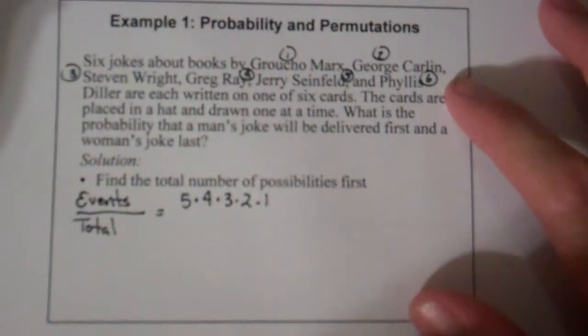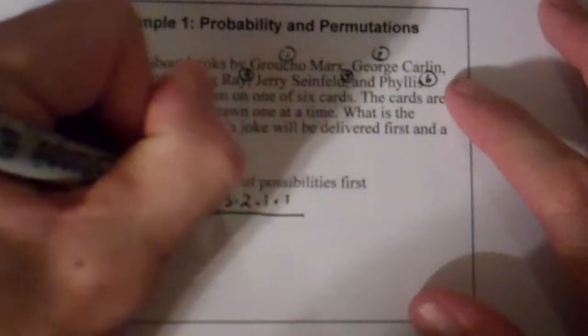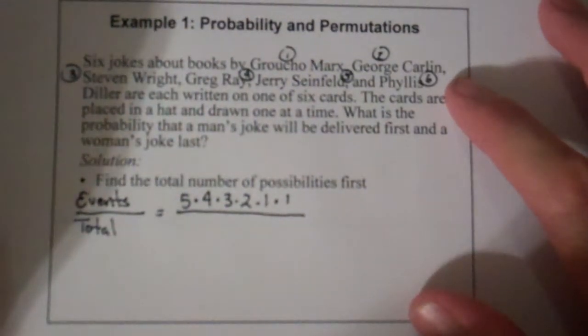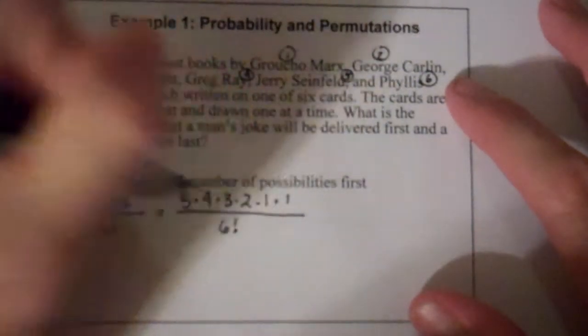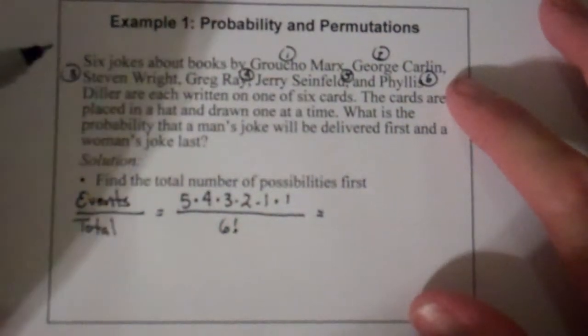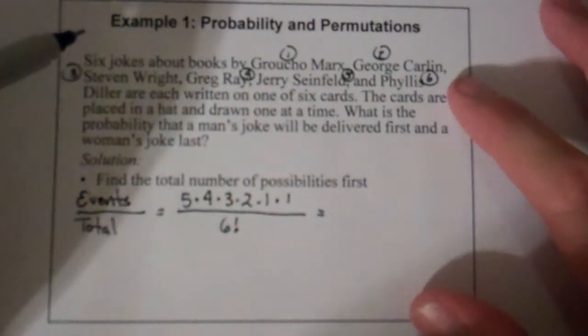So basically I have the five men, four men, three men, two men, one man, and then I have Phyllis Diller, out of a total of six total possible comedians. And so that's the six factorial, because the order does matter here in which the men go.